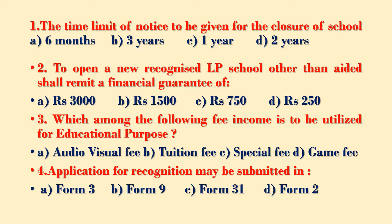To open a new recognized LP school other than aided, a financial guarantee shall be remitted. Options: Option A – Rupees 3,000; Option B – Rupees 1,500; Option C – Rupees 750; Option D – Rupees 250.